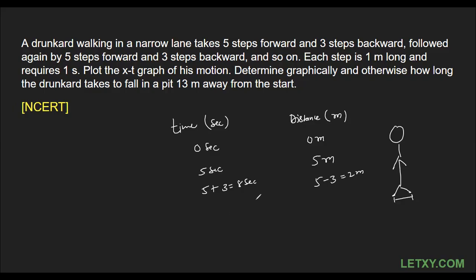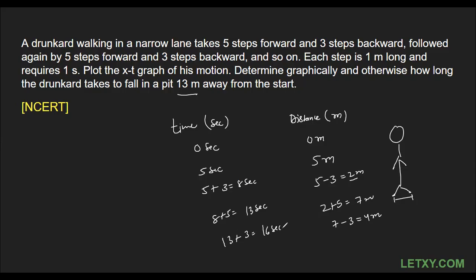He further moves five steps forward, so two plus five equals seven meters, and time is eight plus five equals thirteen seconds. We keep doing this calculation until we reach thirteen meters. Now he comes back three steps: seven minus three equals four meters, and thirteen plus three equals sixteen seconds.